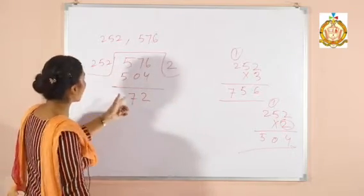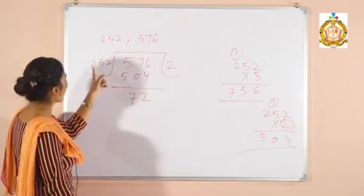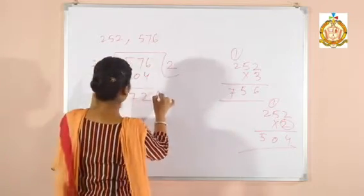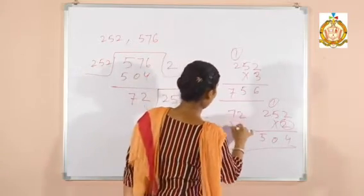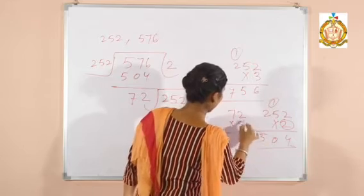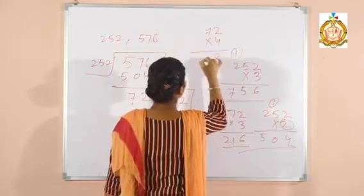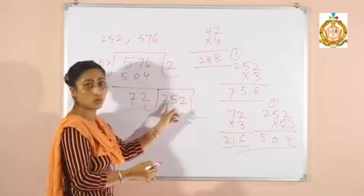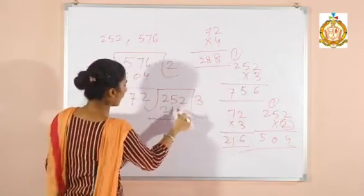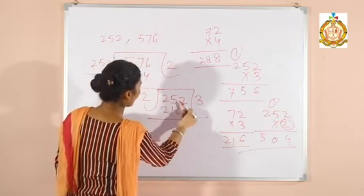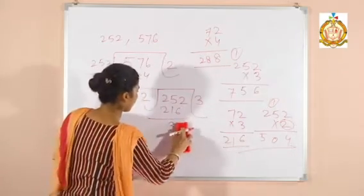Next step: divide the first divisor by the first remainder. The first remainder is 72 and the first divisor was 252. Now divide 252 by 72. 72 times 3 is 216; 216 is less than 252. 72 times 4 gives 288, which is greater than 252. So take 216 with a quotient of 3. Subtract 216 from 252. After subtraction, you get a remainder of 36.